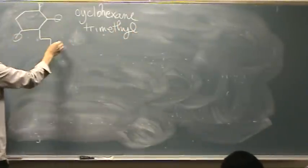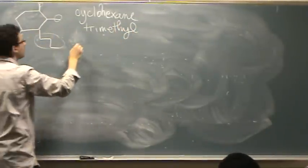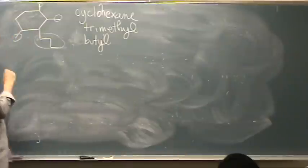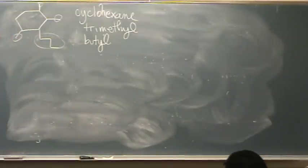And then there's this big one, it's a 1, 2, 3, 4. It's a butyl. There's actually a specific way to name it when it's that long that we're not going to worry about. But it's a type of butyl, we'll just call it butyl.